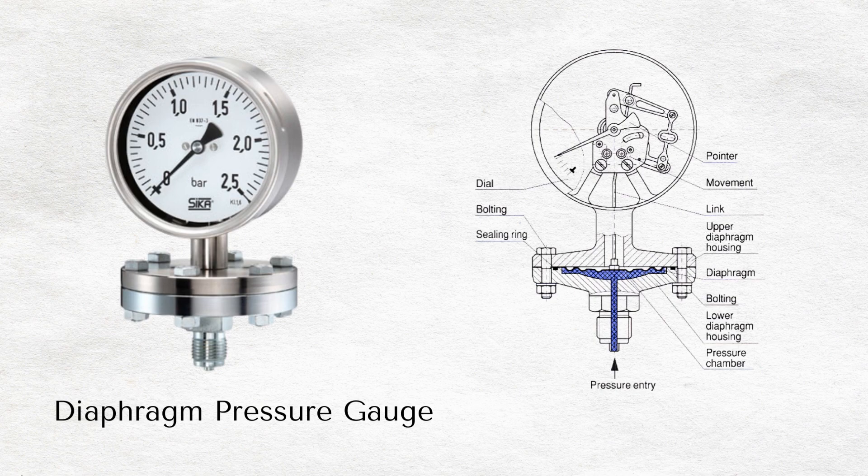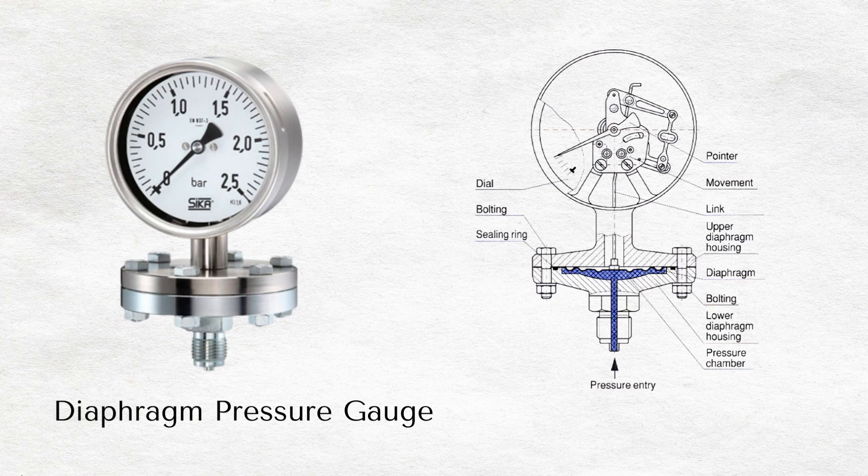Diaphragm pressure gauge. A diaphragm pressure gauge is elastic and becomes displaced when pressure is applied. This type of pressure gauge works on the same principle as a Bourdon pressure gauge but measures pressure using a diaphragm instead of a flexible tube.